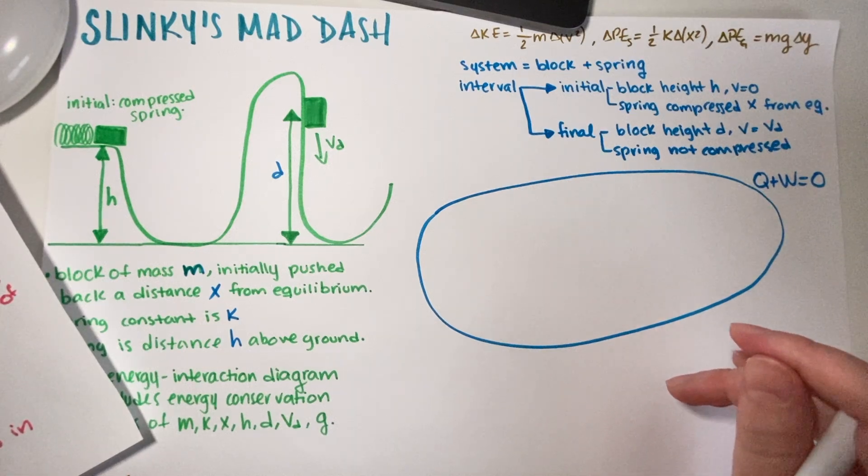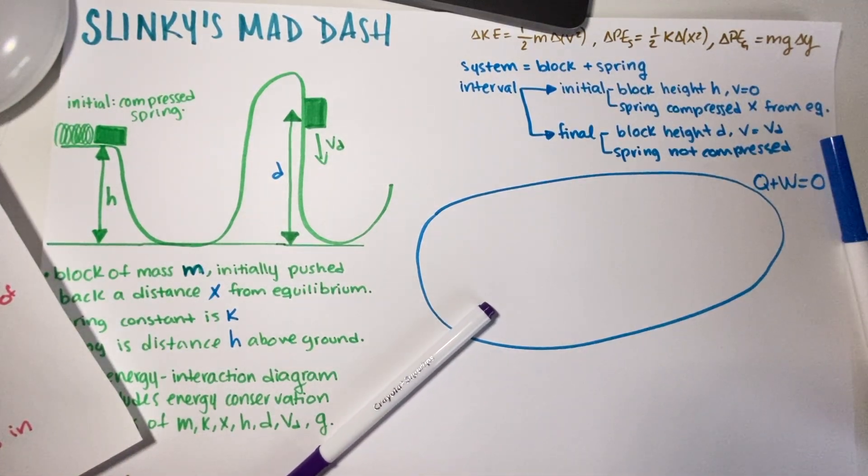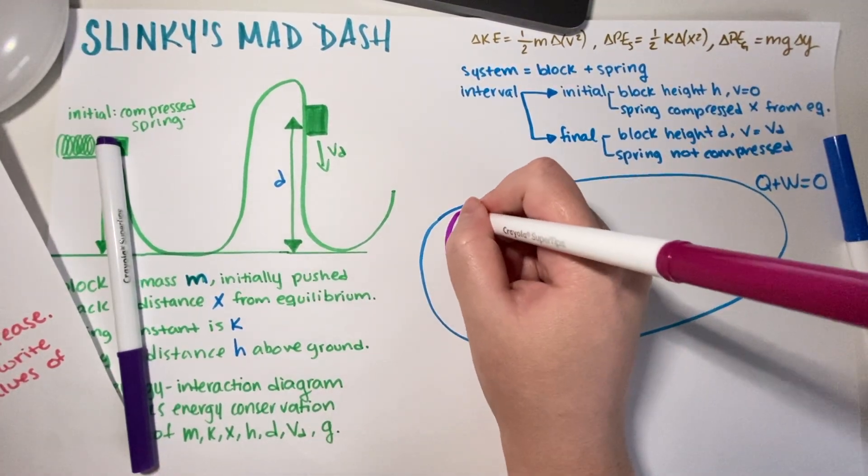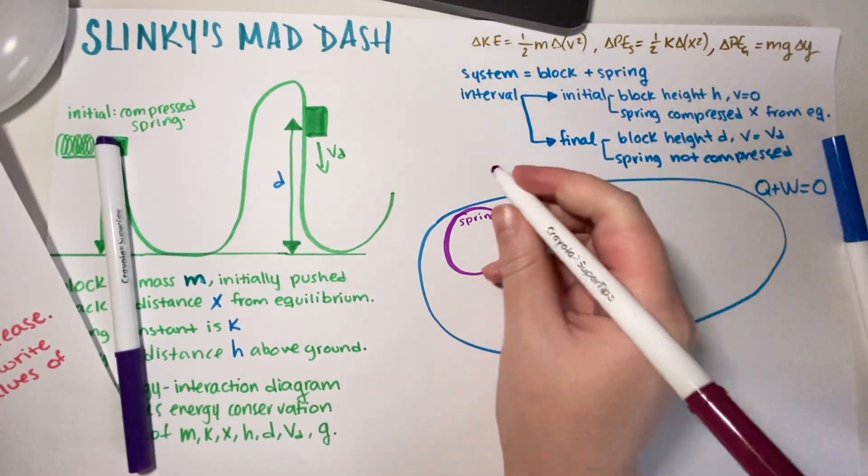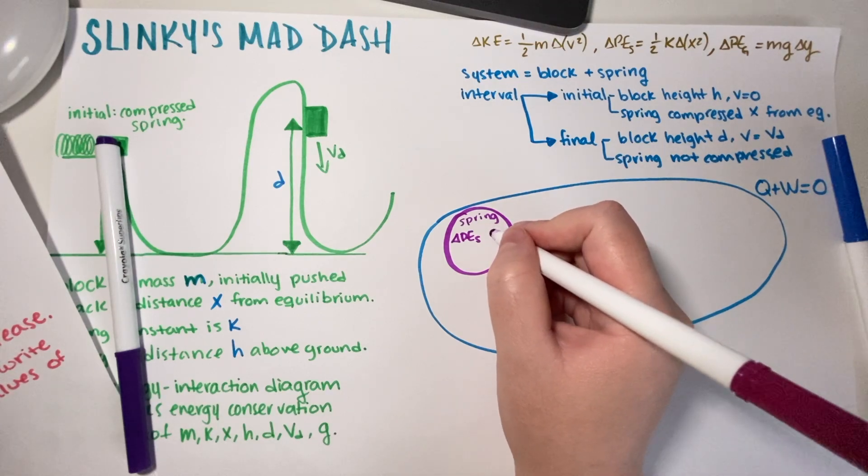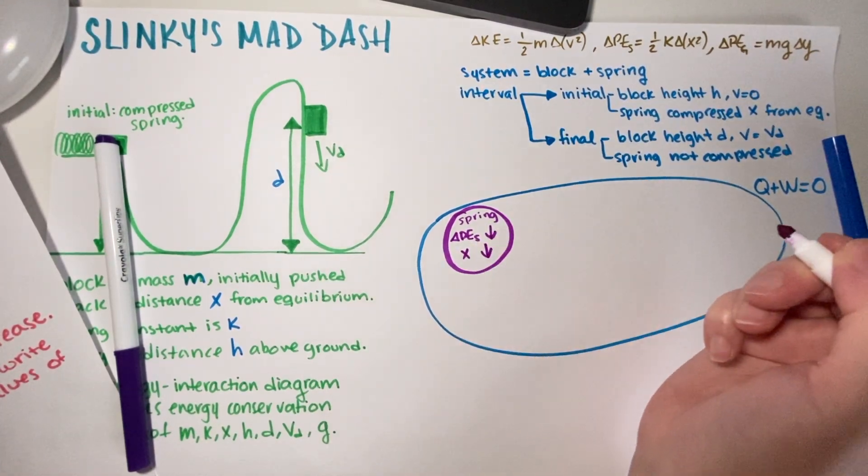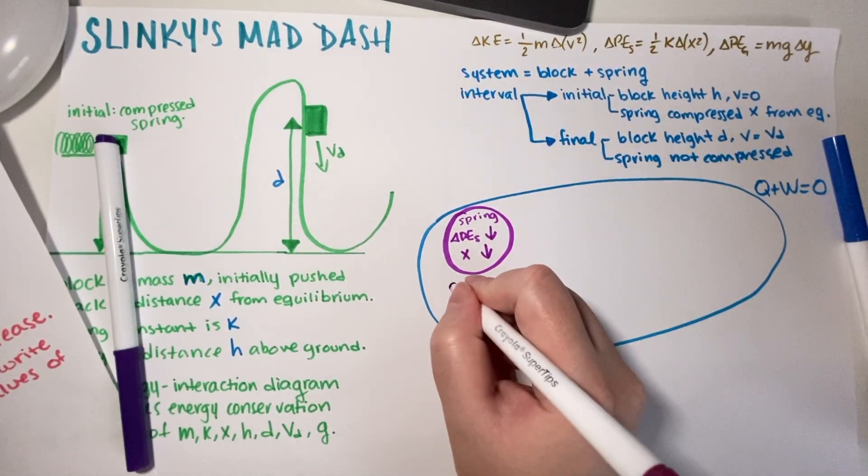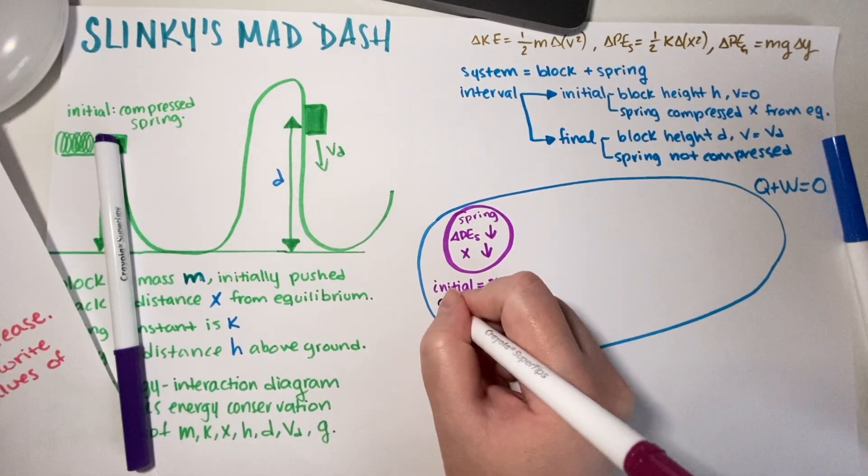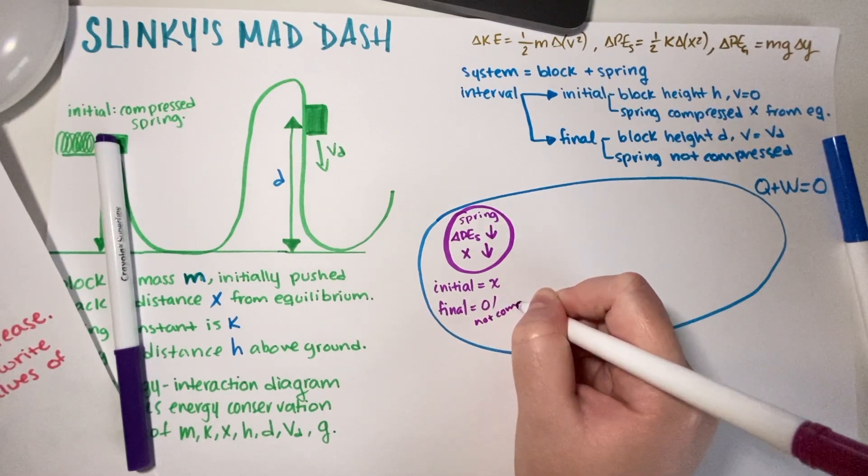Now we need to figure out how many energy changes do we have. Well, initially it's very easy to see that the spring is going to have an energy change because the spring starts compressed and then it decompresses. So we're going to draw one bubble for the spring. Each bubble needs to have objects. So spring, type of energy changes, that's changing. In this case, that would be delta PE spring. And in this case it is going down because it had some energy but then you decompressed it. So let's just say that X is going down because X is the compressed distance. Your initial was that it was compressed an X amount and then your final zero, not compressed.